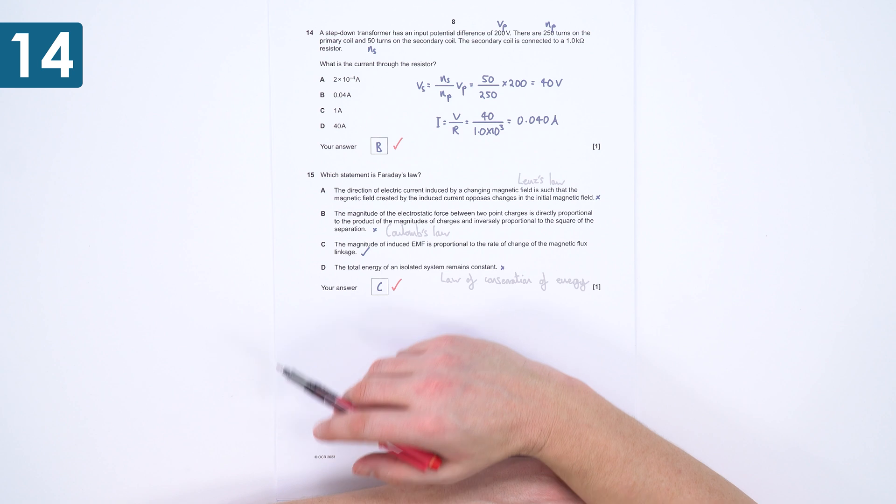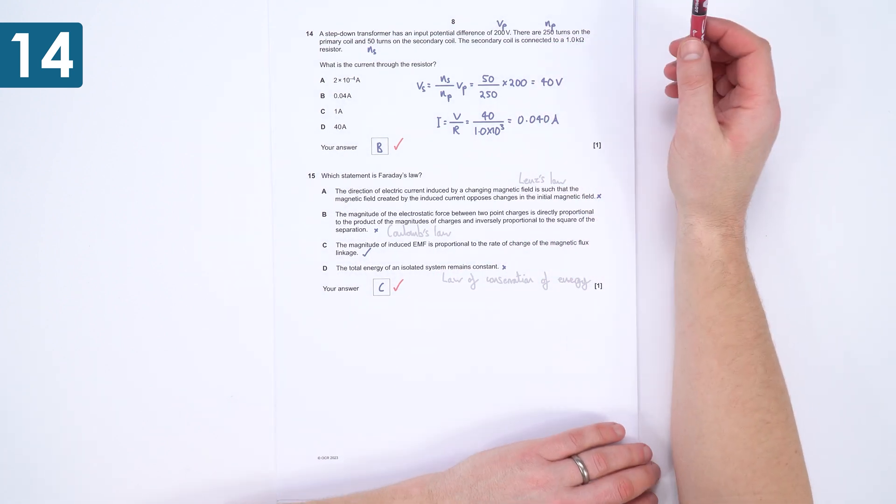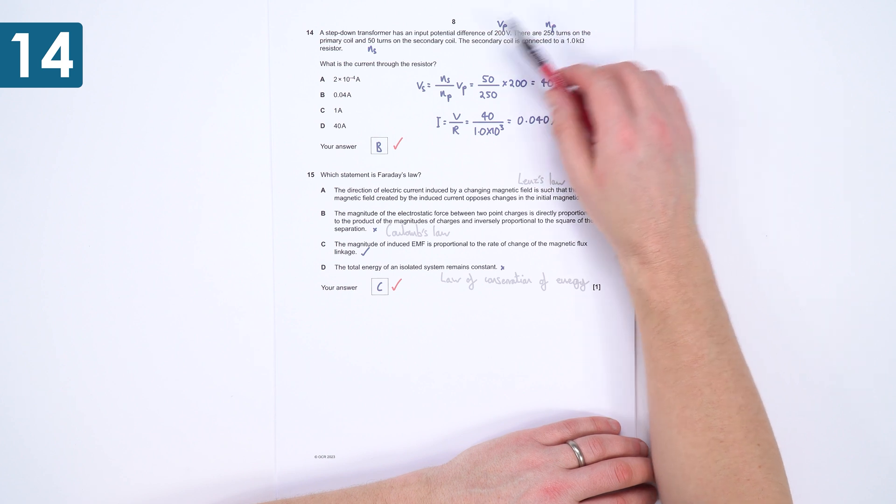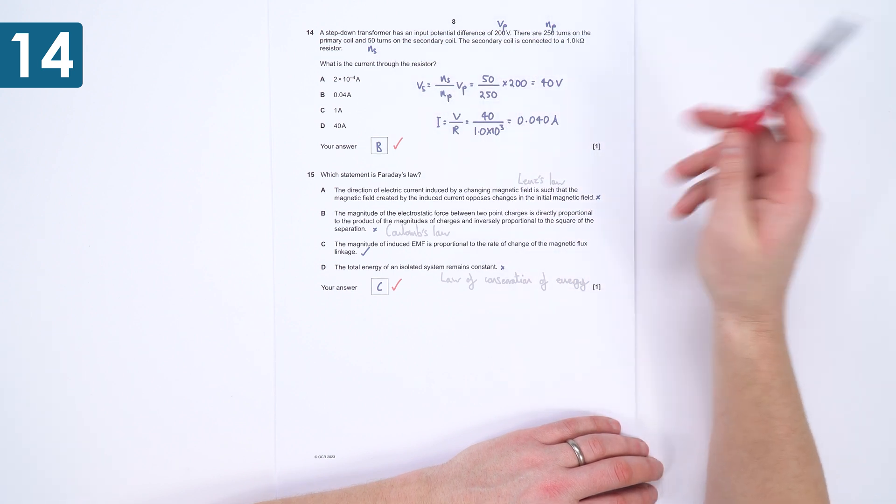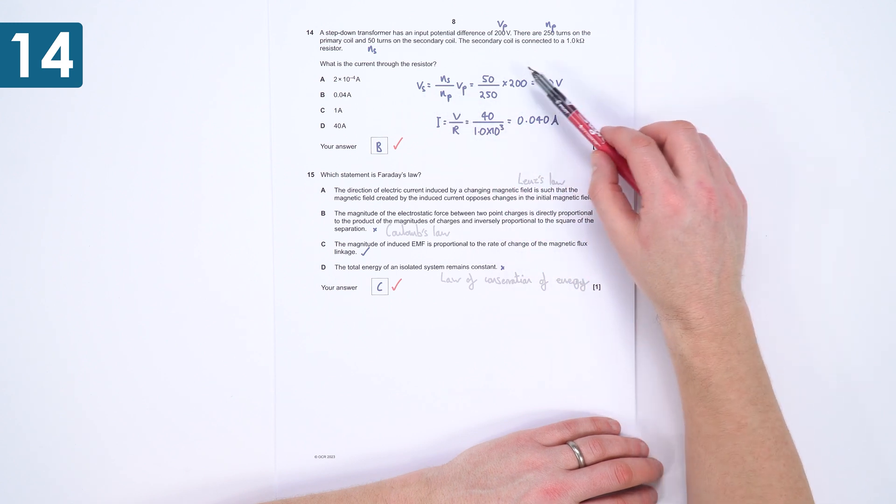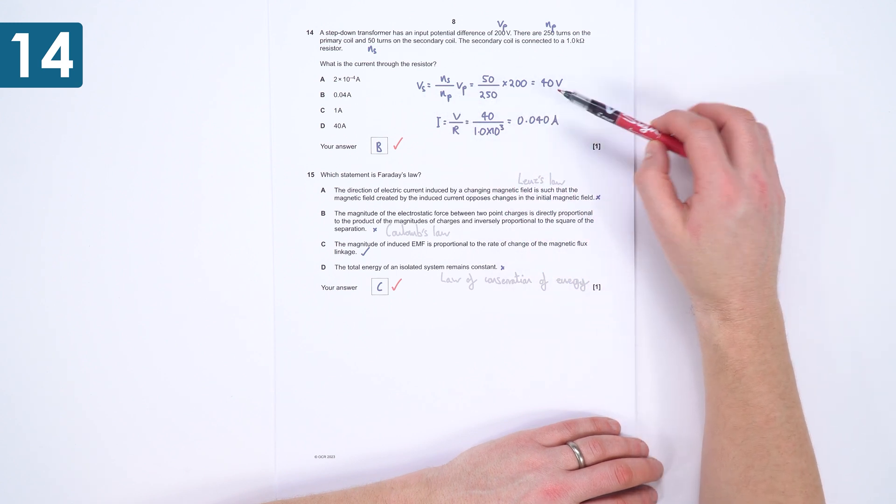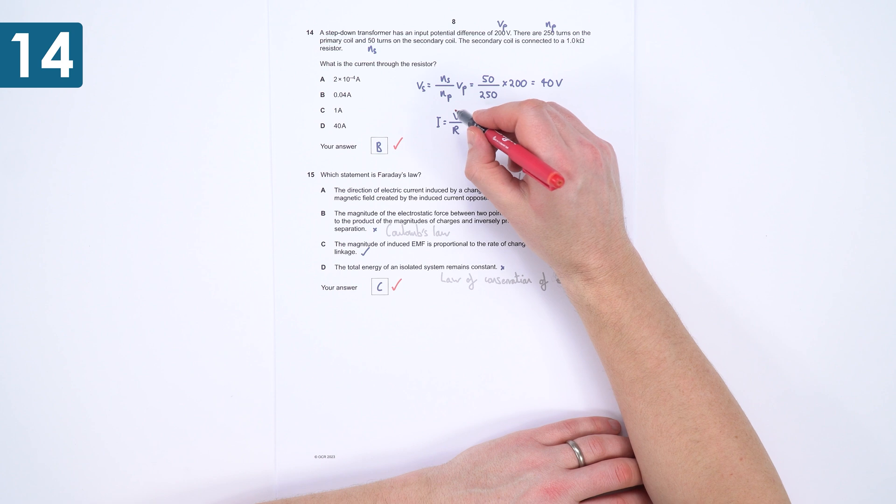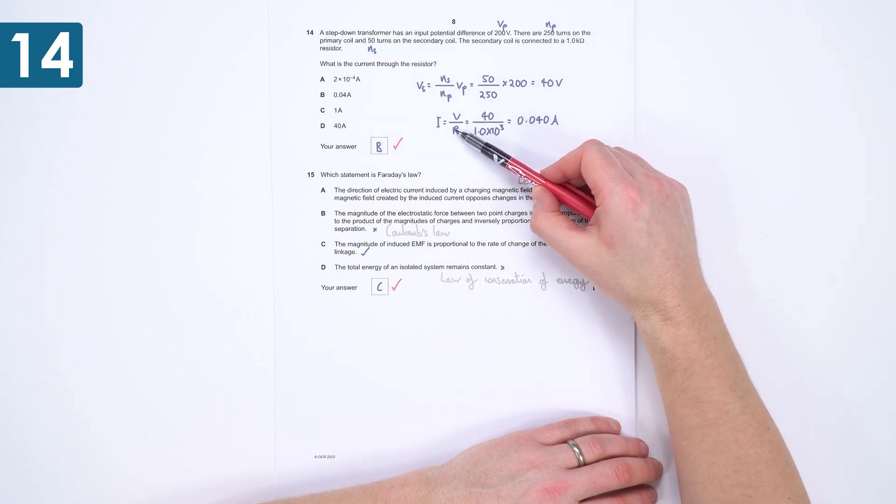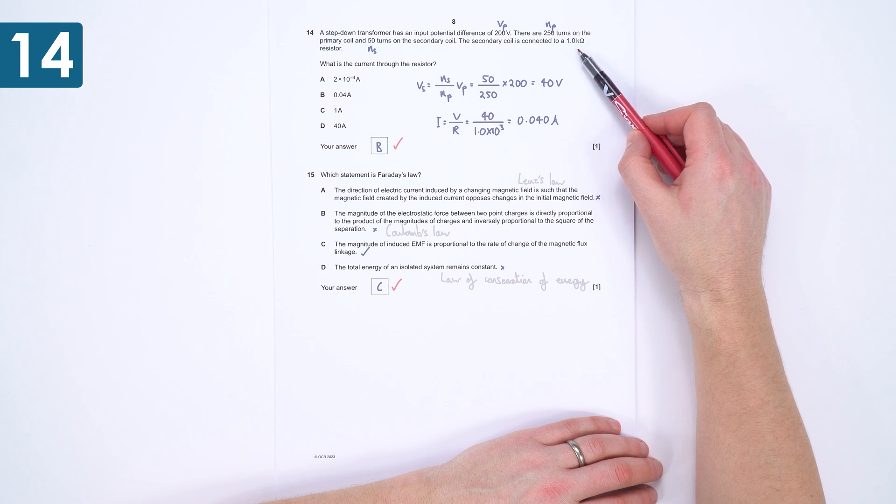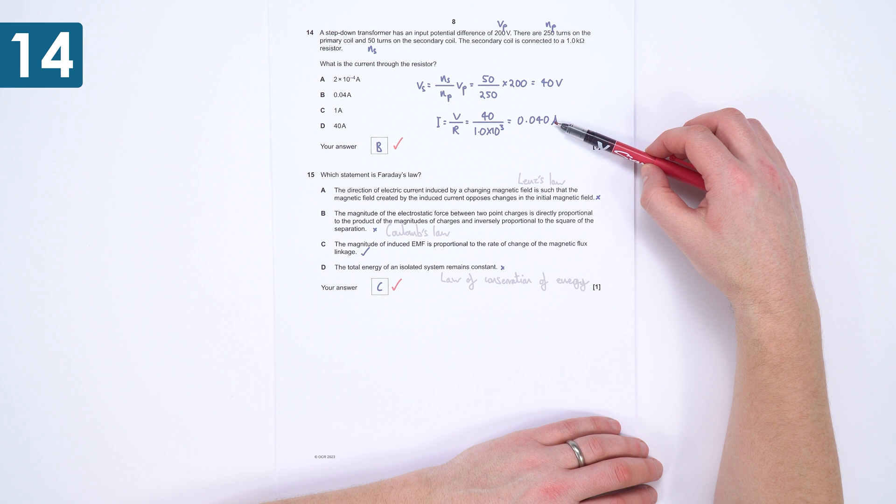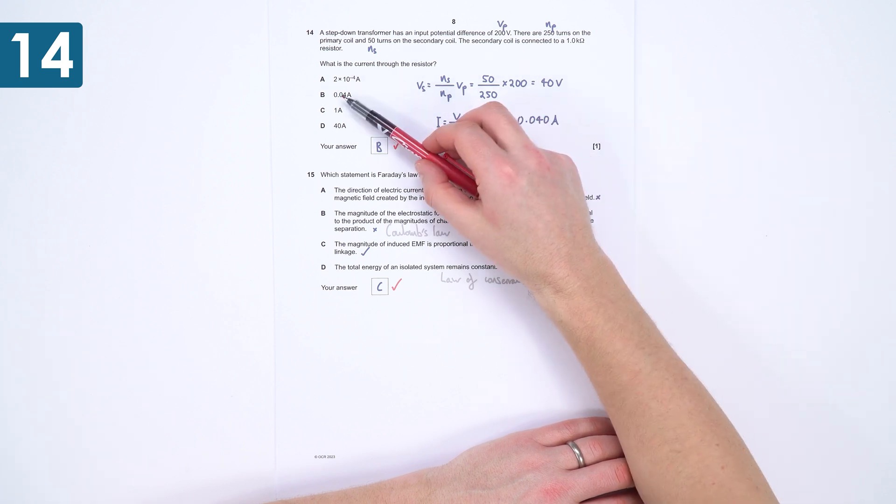This one here, a bit more straightforward. I'd say when you've got questions about transformers, it's always good to note in a question which is VP or NP or NS and so on. So we've done all of that. We know that we can then work out the secondary potential difference, which is just going to be 40 volts. And then we've got our standard equation for anything to do with electricity, V equals IR. We know the potential difference, we know the resistance of the one kiloohm resistor, and therefore we can just work out the current as 0.040 amps, which is in this case, B.